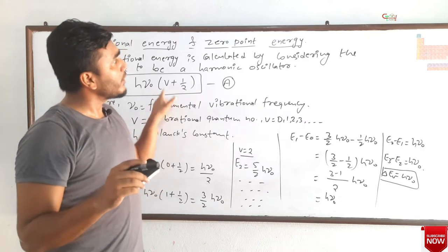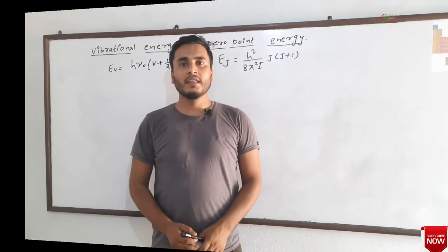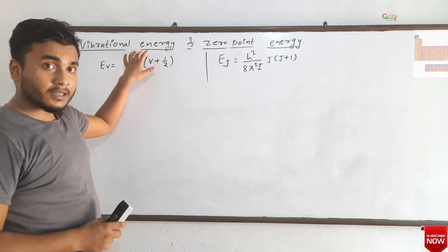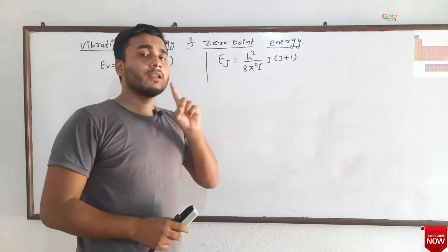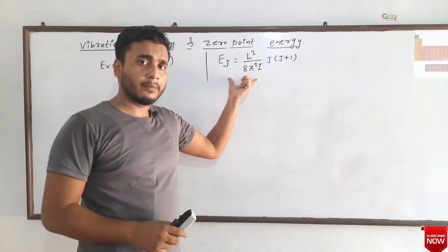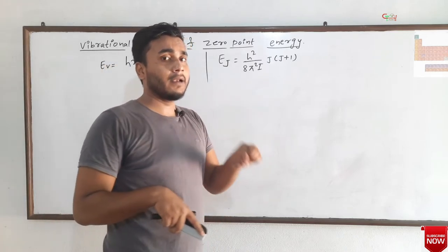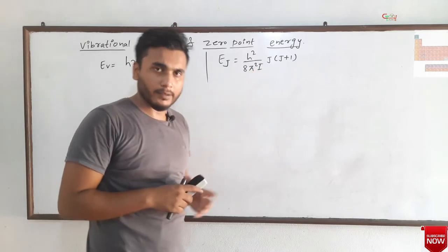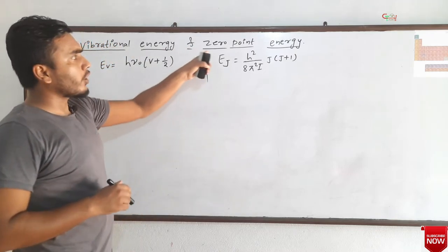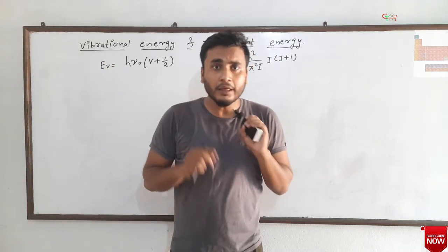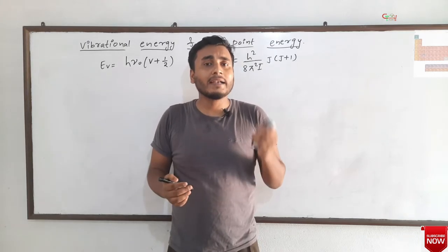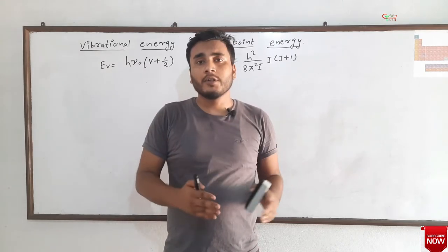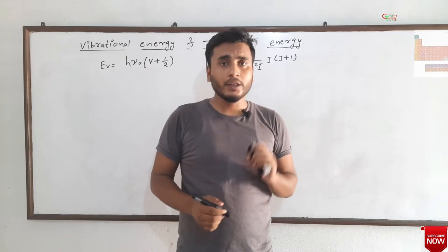Now we need to see what is zero point energy. You can see two formulas on the board: the first is for vibrational energy level and the second is for rotational energy level. Zero point energy means simply the energy at absolute zero of temperature. Absolute zero is the lowest possible temperature — zero Kelvin.